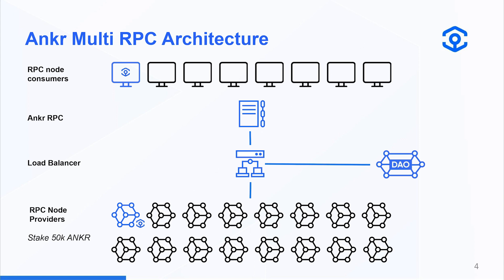For the node marketplace, it is ultimately very similar. You can be an RPC node provider if you stake 50,000 Anchor, and then you connect to Anchor multi-RPC, where the load balancer delivers node requests to the end consumer — fulfilling a similar role as the auto bidder mentioned in the last slide. The load balancer can be calibrated in different ways, prioritizing consumption of certain nodes under certain conditions, including proximity to the end consumer to favor very low latency. Anchor DAO will ultimately govern the calibration of that load balancer.